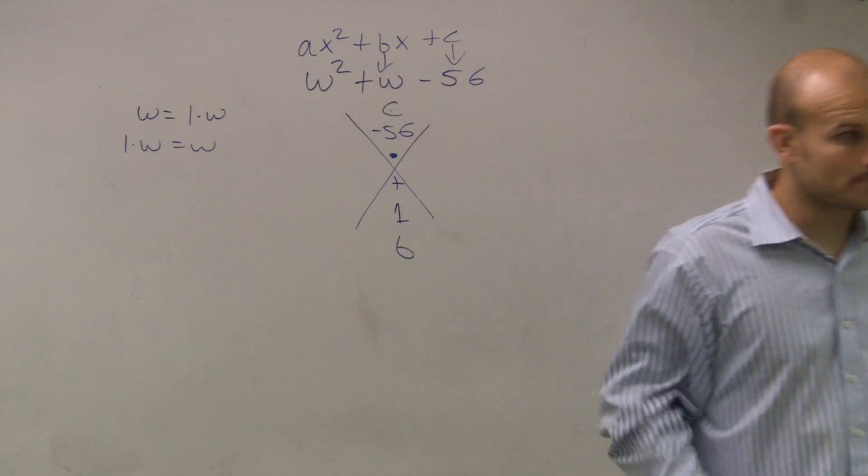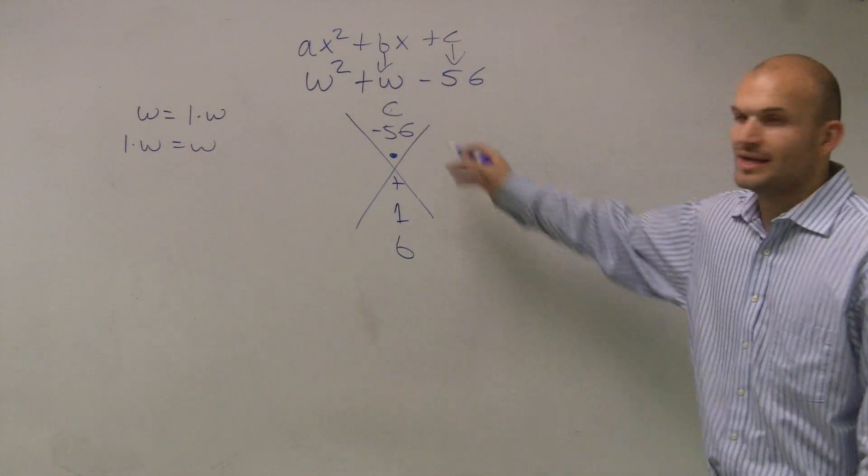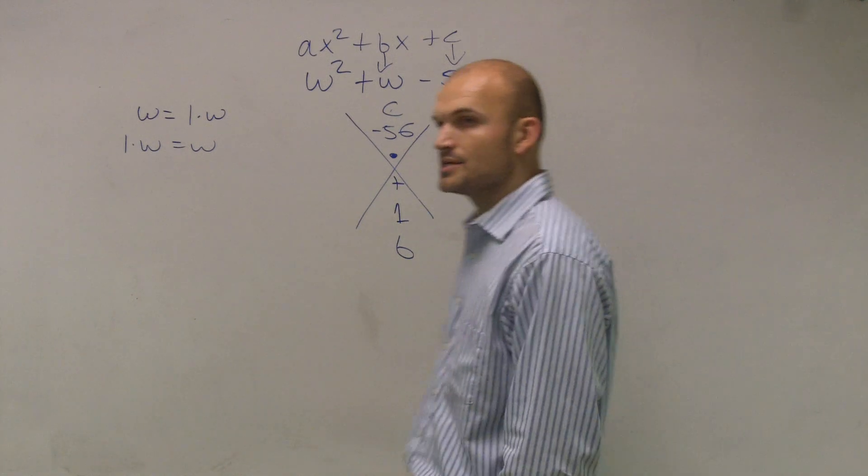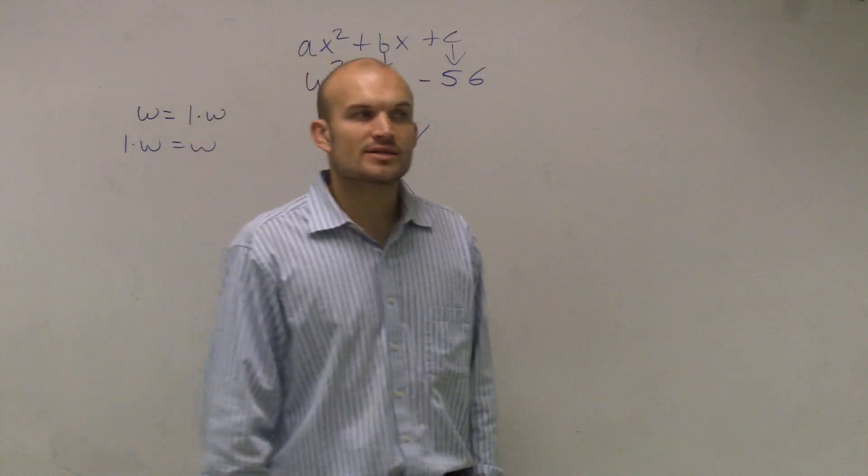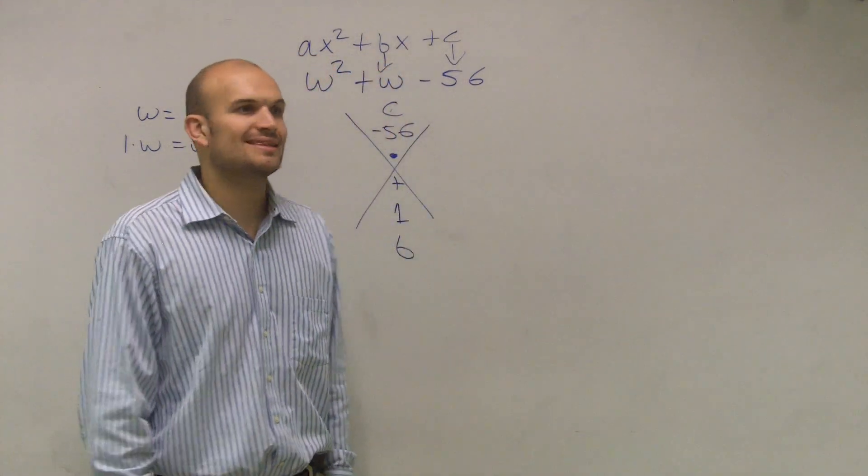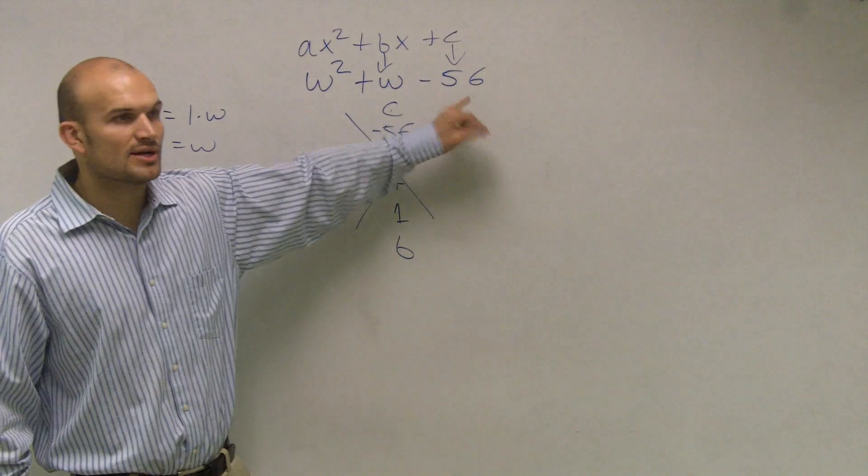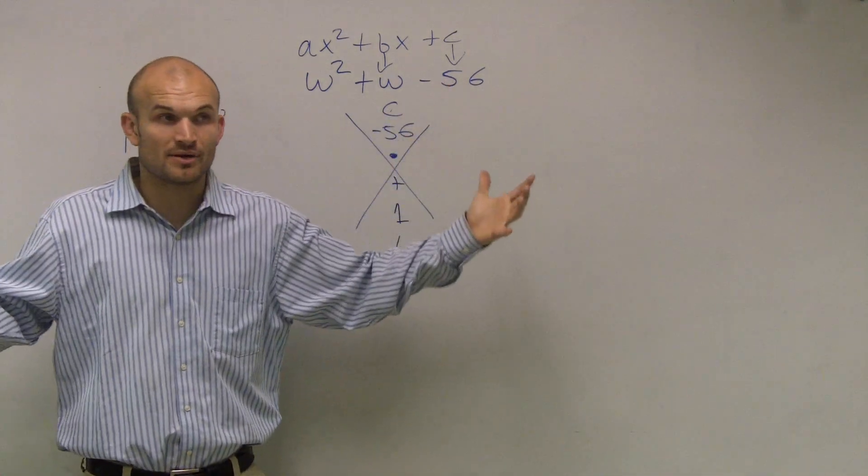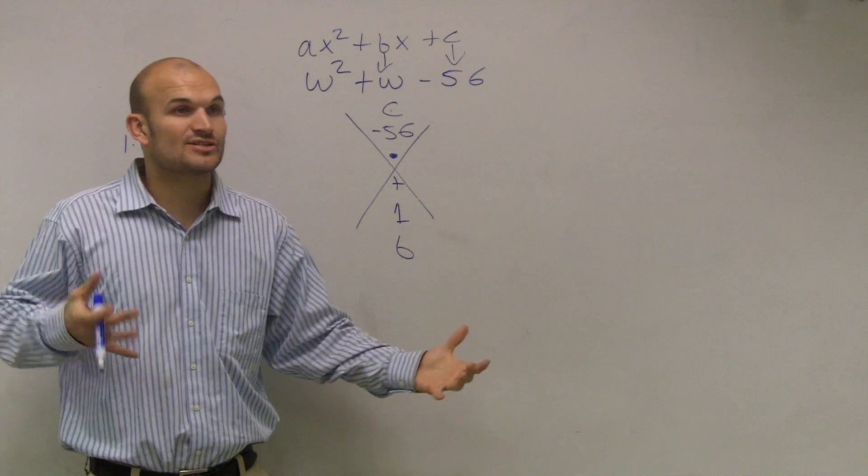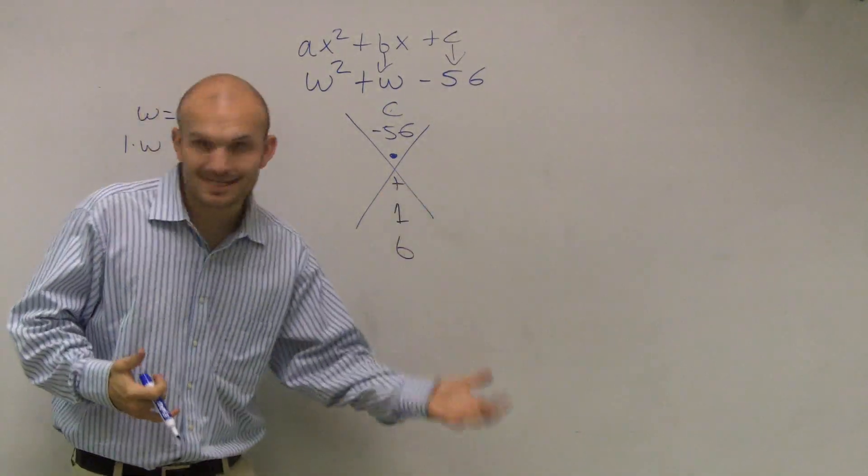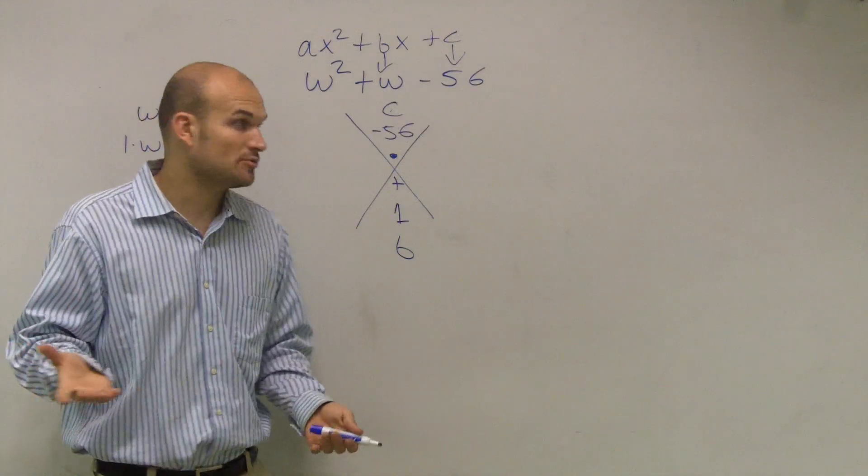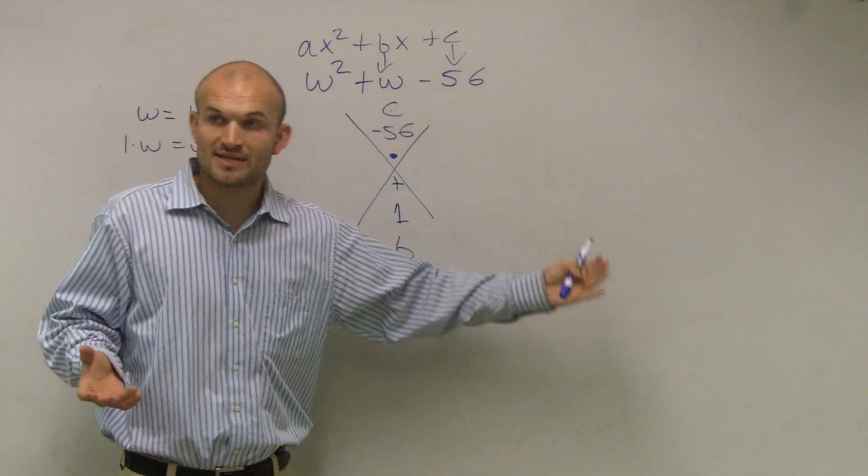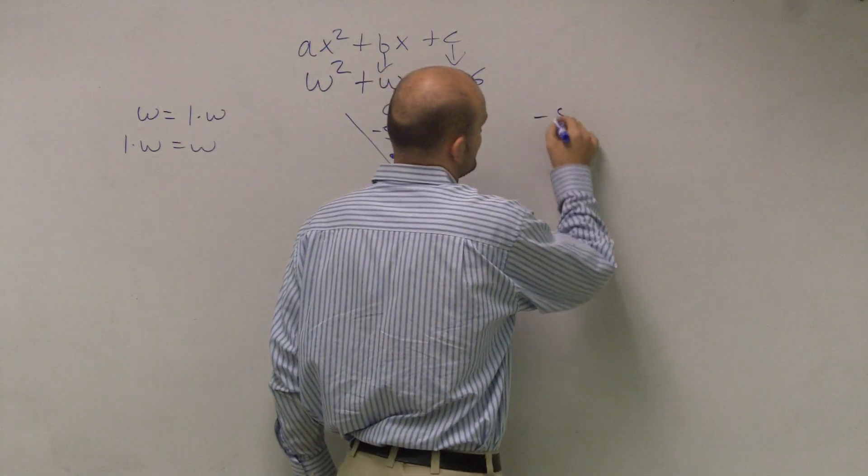So now what we're going to do is I need to figure out what two numbers multiply to give me negative 56, but add to give me a positive 1. Now there's a couple tips and tricks I want to help you look out when you're trying to think of these. First of all, my number is negative. So I need to multiply two numbers to get a negative number. That means one of my factors has to be negative. The other one has to be positive, right? If they're both positive, I would have a positive product. If they're both negative, I'd have a positive. So when I write negative 56...